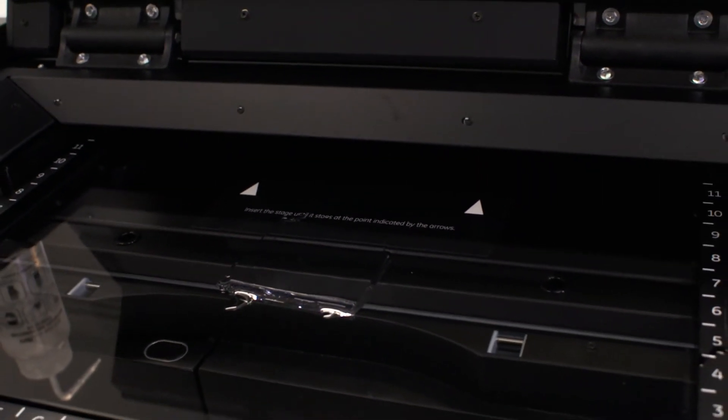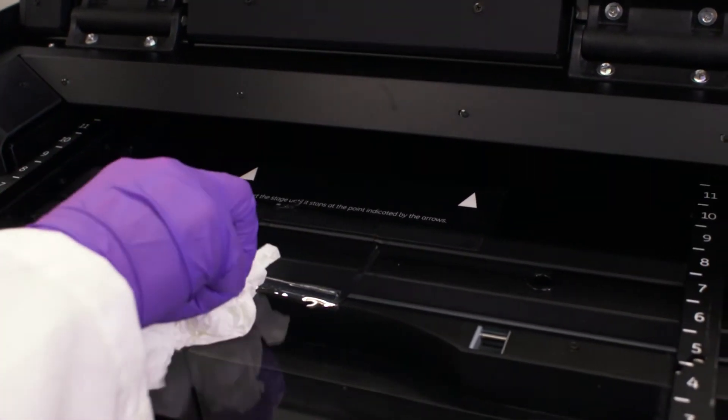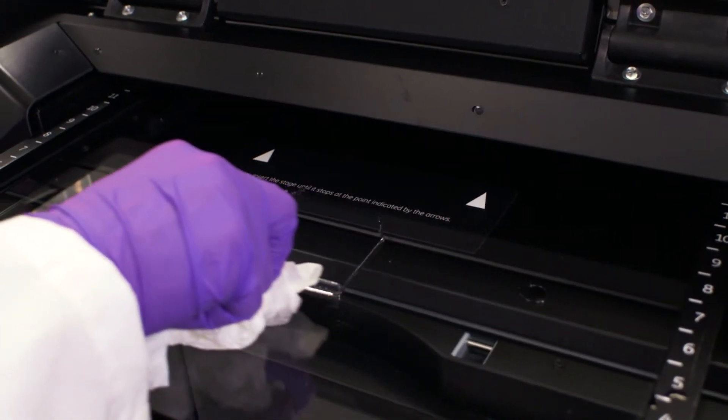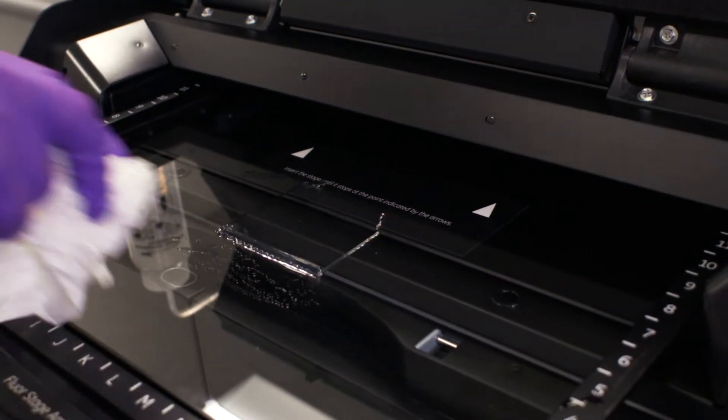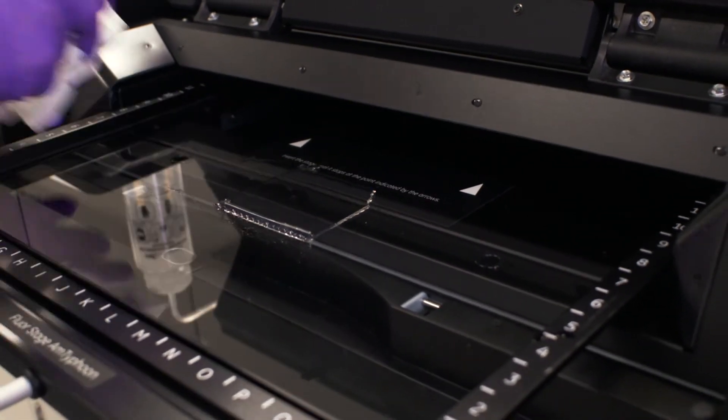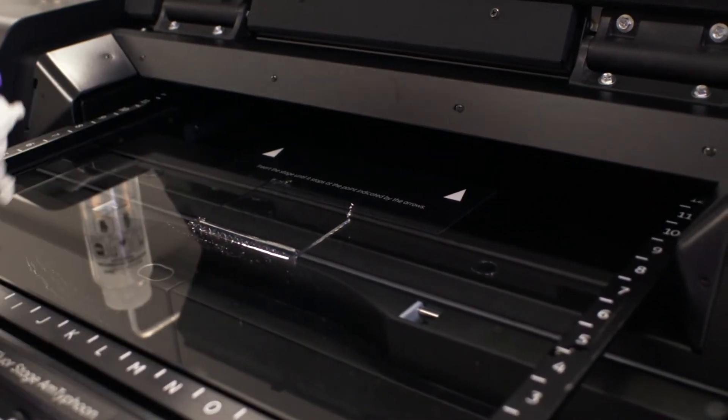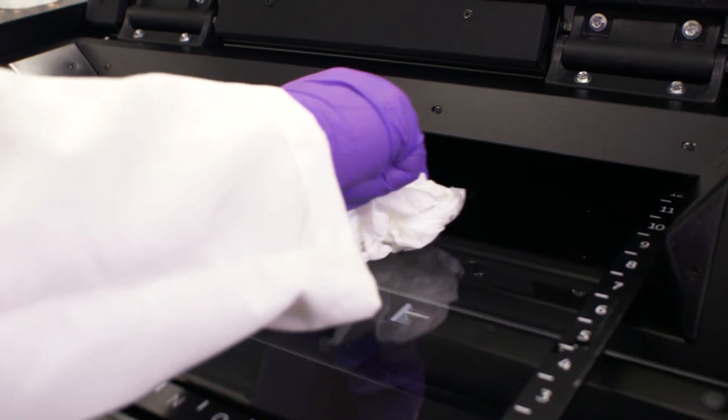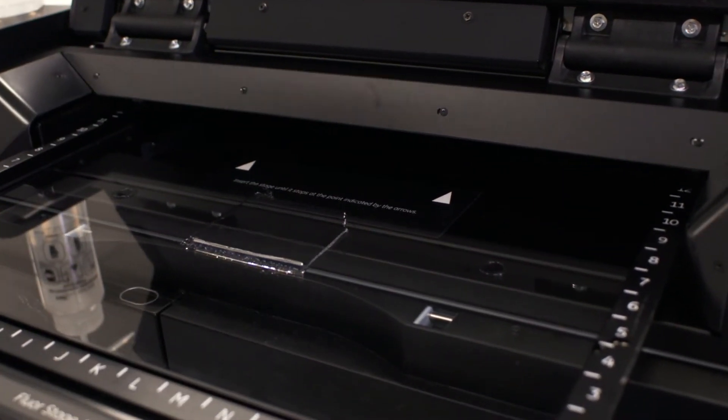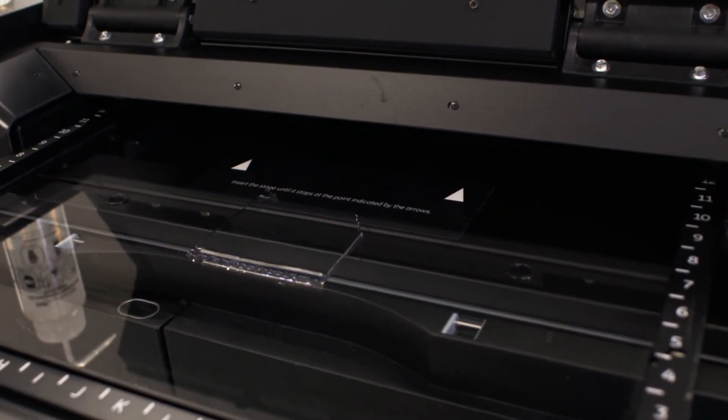Now we're going to take some lint-free tissue and suck up the excess liquid around the edge. This will pull the gel flush with the glass. We should also avoid any chance for bubbles underneath the gel. You see there's no bubbles there.